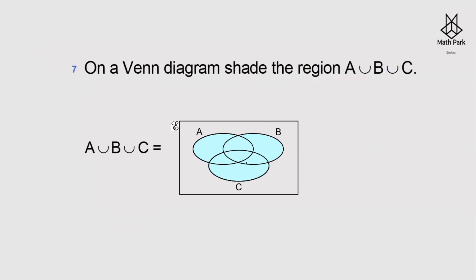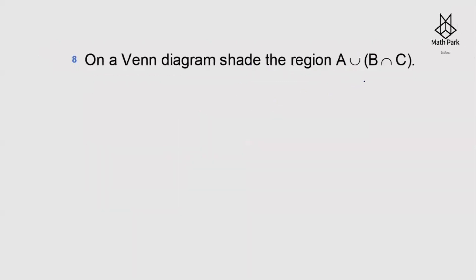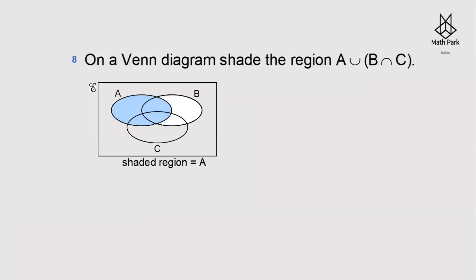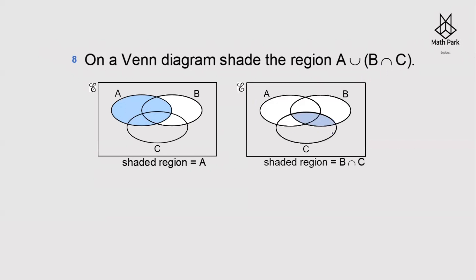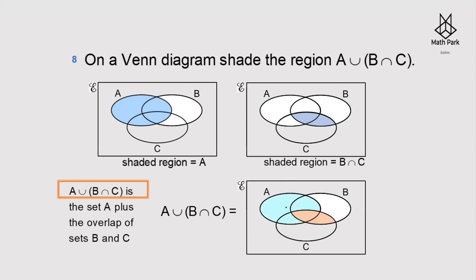On a Venn diagram, shade A∪(B∩C). First, A is shaded. Then B∩C is the overlap of B and C. The union of A and B∩C includes the entire set A plus the overlapping part of B and C. So the shaded region is all of A together with the B and C overlap.